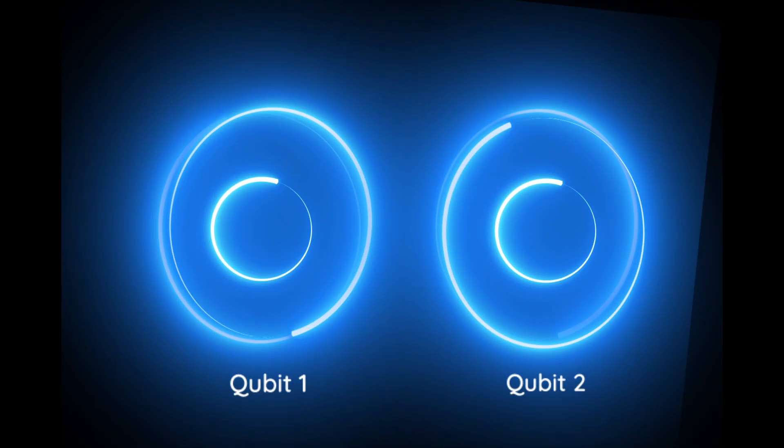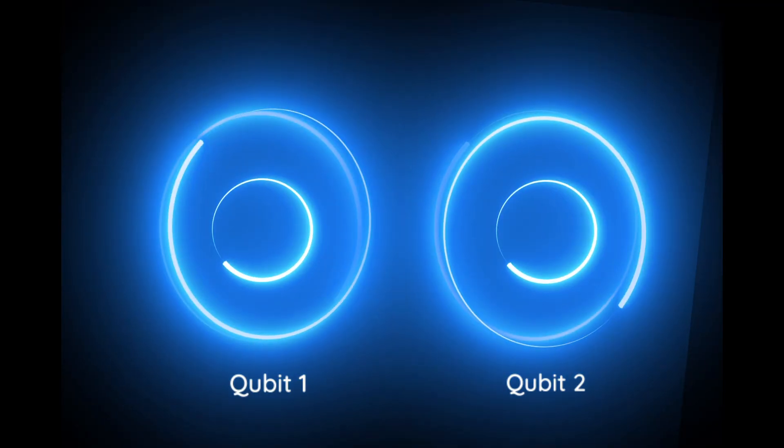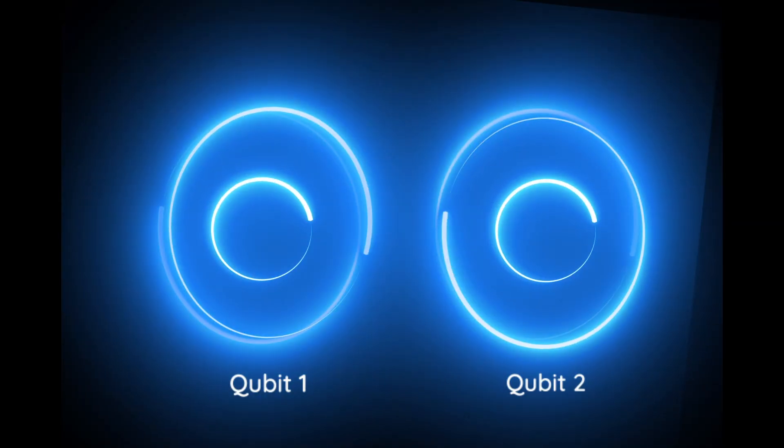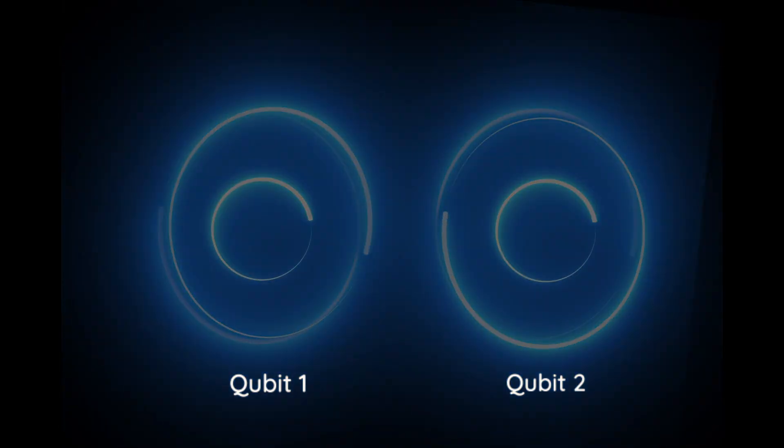But here's where it gets even weirder: entanglement. When qubits are entangled, changing one instantly changes the other, even if they're light years apart. This interconnectedness gives Willow unprecedented computing power.